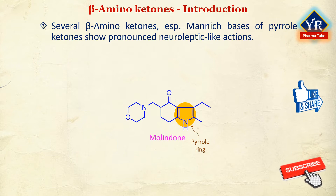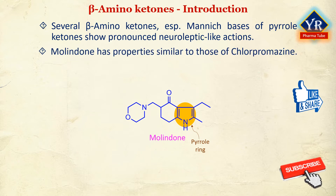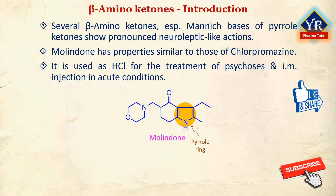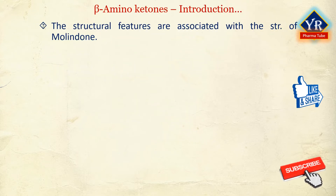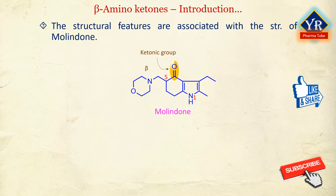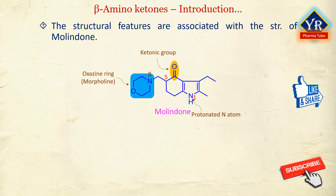One of the most potent compounds belonging to this class is molindone. Molindone has general properties similar to those of chlorpromazine. Chlorpromazine hydrochloride is used orally in the treatment of psychosis and given by intramuscular injection in acute conditions. The overall structural features associated with activity can be seen in the structure of molindone. In addition to the beta-amino ketone group, there must be an aryl group positioned as in molindone. It is conjectured that the proton on the protonated amino group hydrogen bonds with the electrons of the carbonyl oxygen atom.